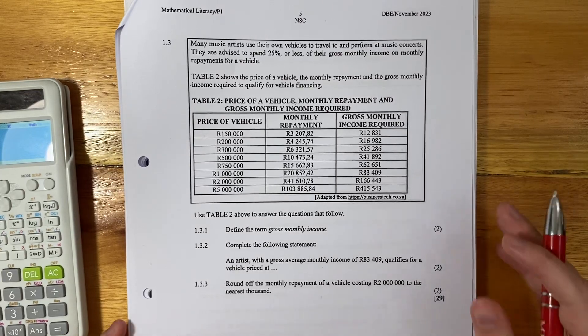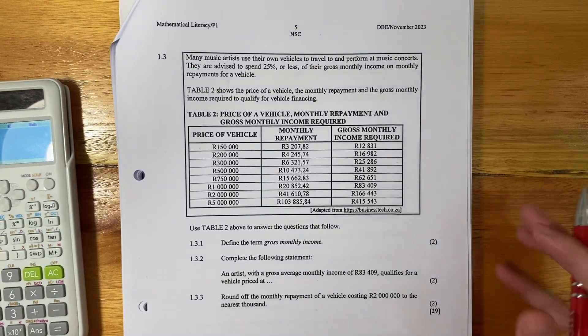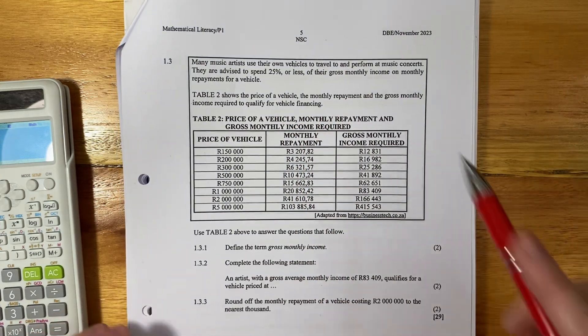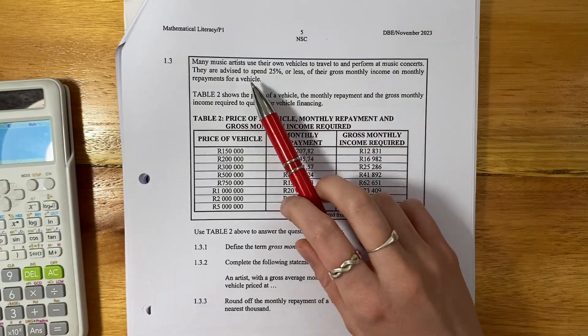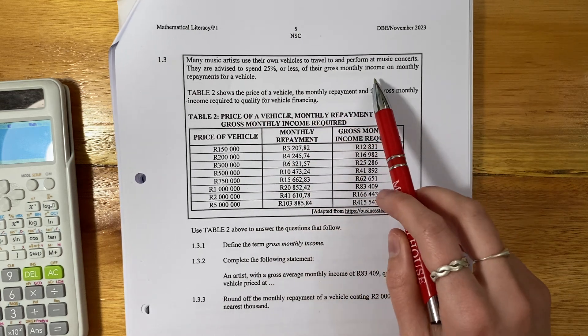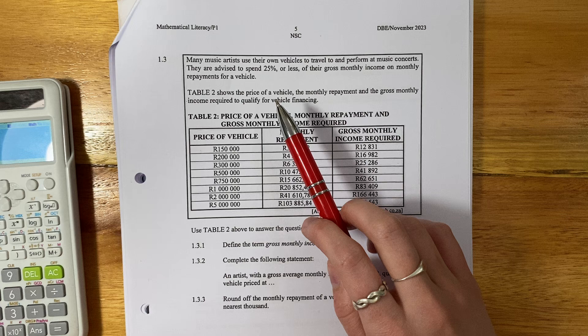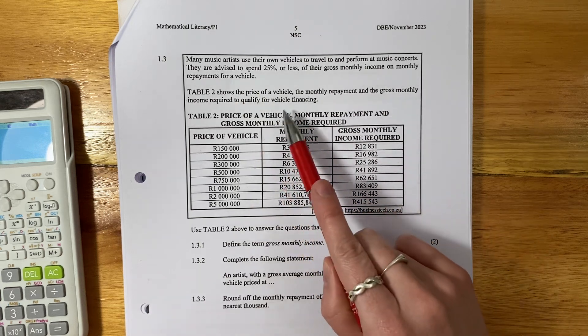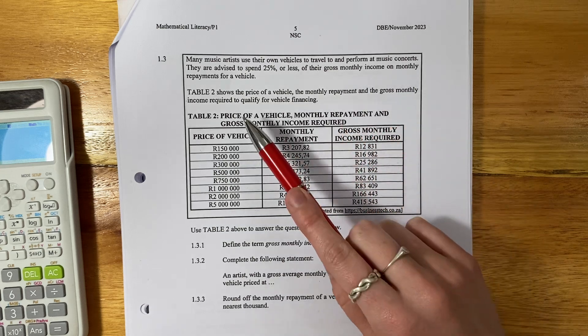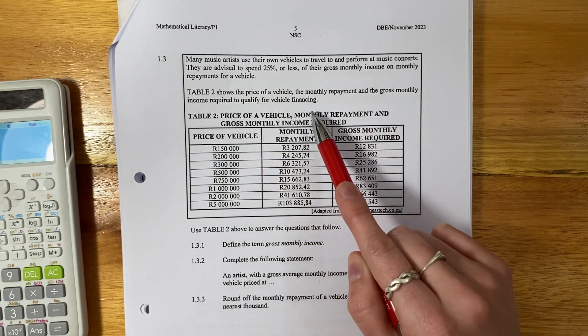All right, let's look at 1.3. Many music artists use their own vehicles to travel to and perform at music concerts. They are advised to spend 25% or less of their gross monthly income on monthly repayments for a vehicle. Table two shows the price of the vehicle, the monthly repayment and the gross monthly income required to qualify for vehicle financing.